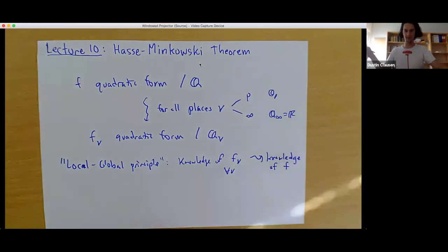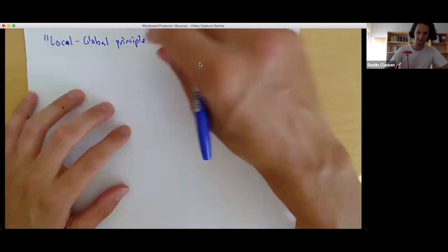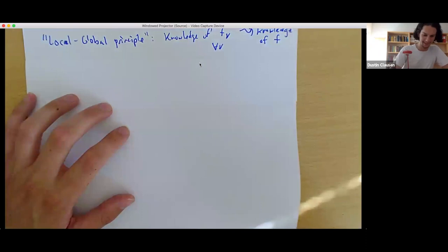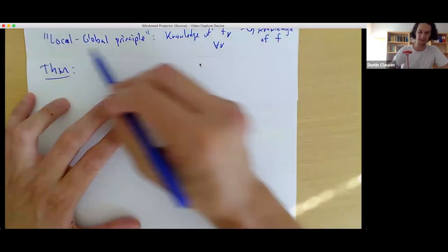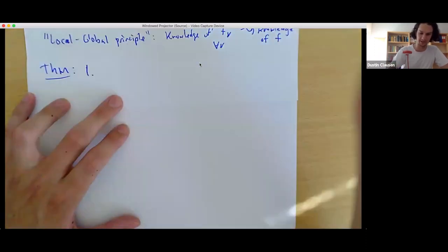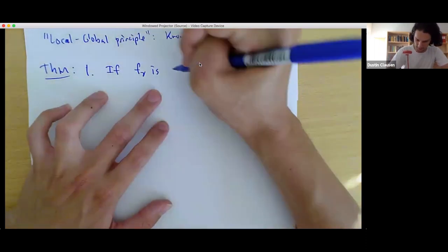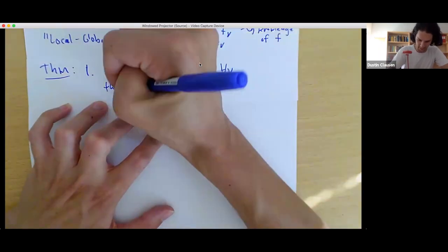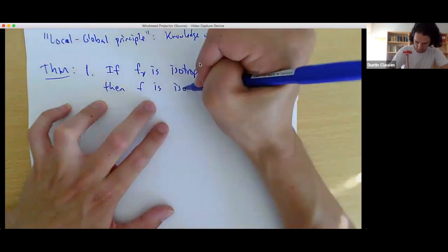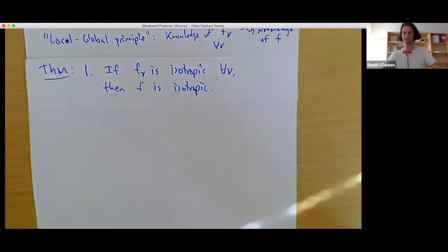Now let me state it precisely. There are actually three different forms — not forms as in quadratic forms, but three different manifestations of this local-global principle which the theorem says are satisfied. The first one is that if F_V is isotropic for all V, then F is isotropic.